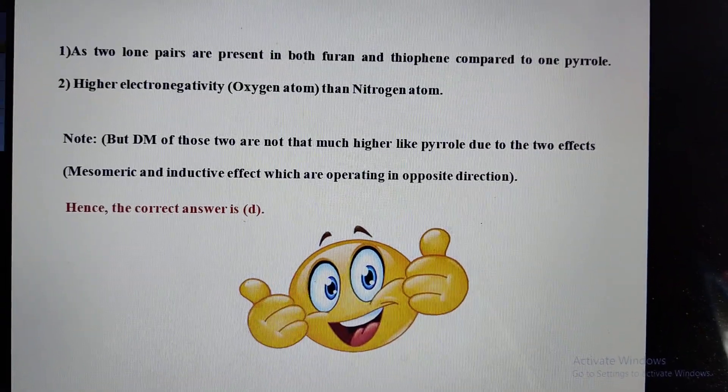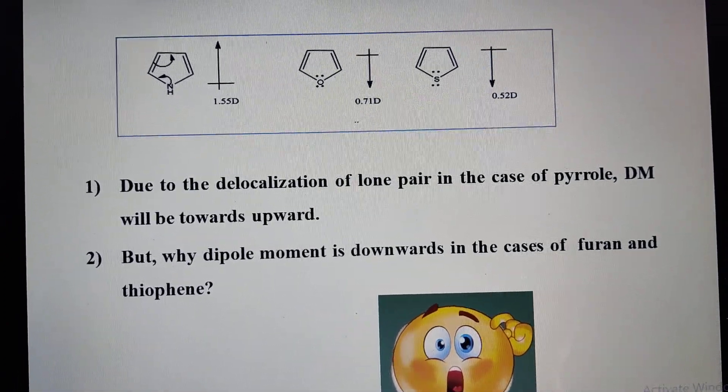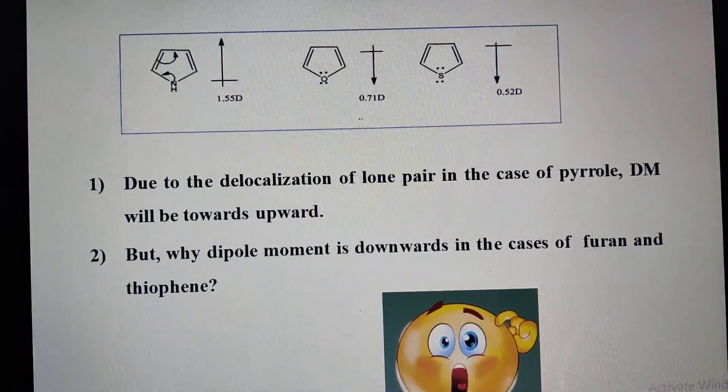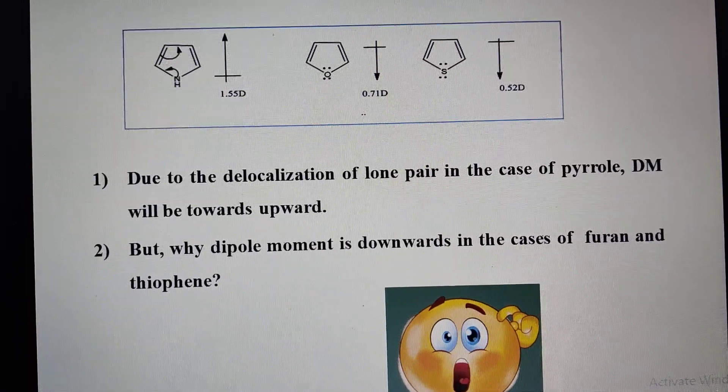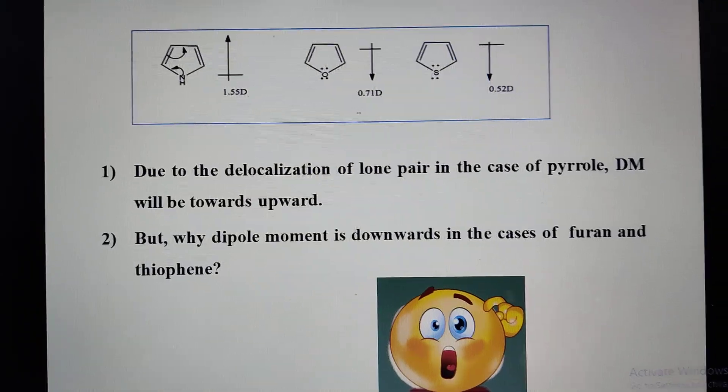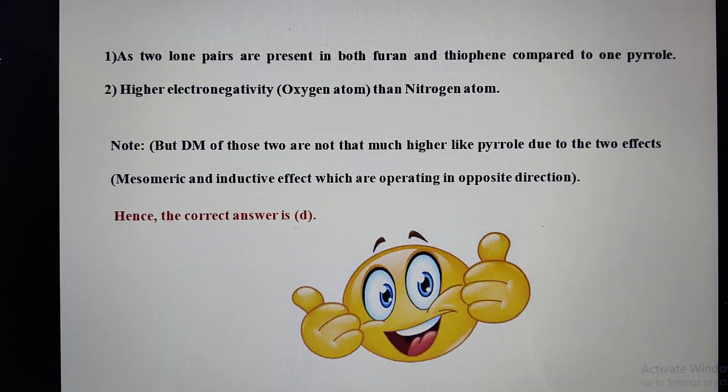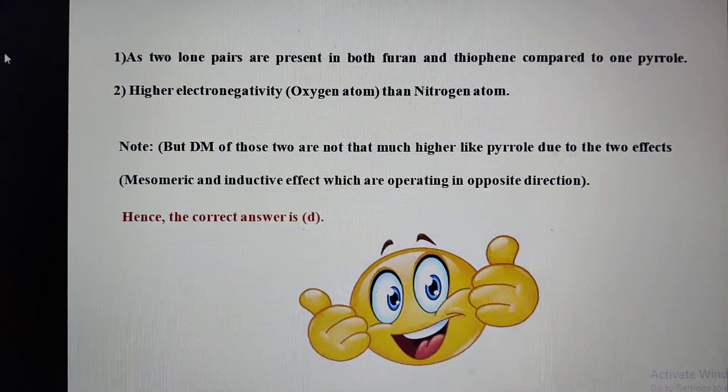But if you will see the value of dipole moments - in pyridine and pyrrole it is 1.55 - but in the case of furan and thiophene that is quite low. Why so? Because in both cases mesomeric effect and inductive effect both are operating at the same time and they oppose each other.